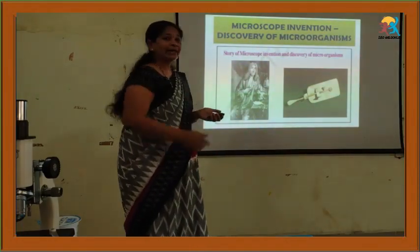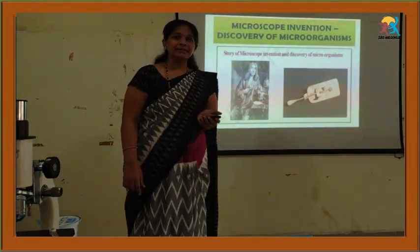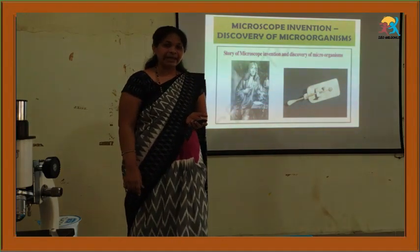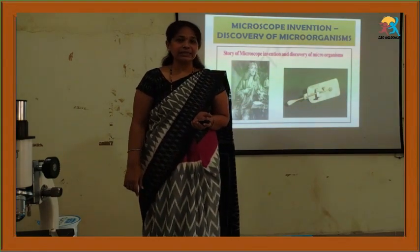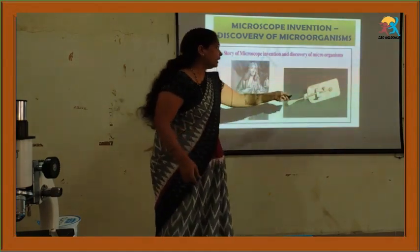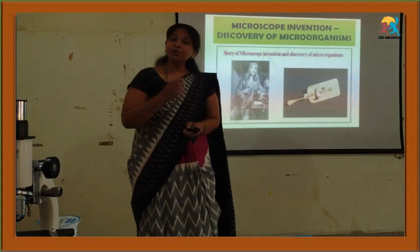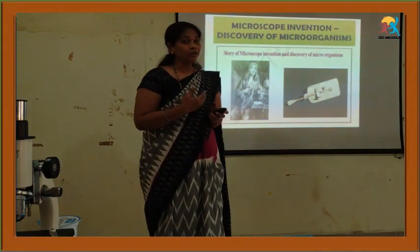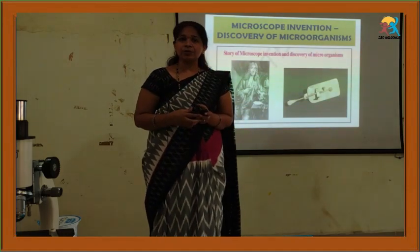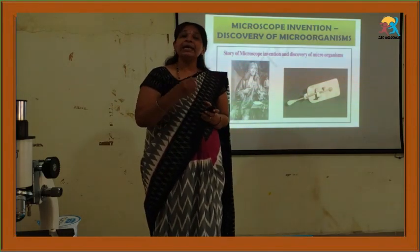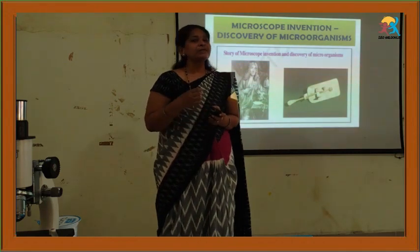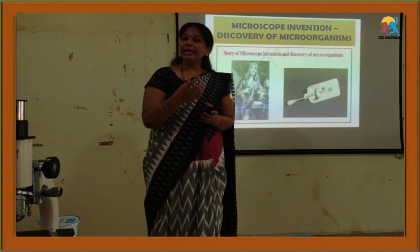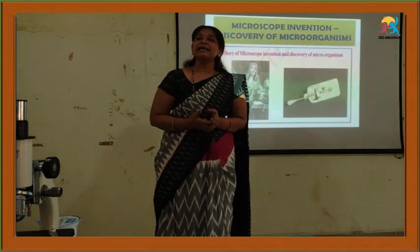Students, can you identify this scientist? Antony van Leeuwenhoek — he is from Netherlands and he was a cloth merchant. He built a single lens microscope which could magnify an object about 300 times. He also built a powerful microscope with the help of which, in 1674, he observed small living moving organisms.